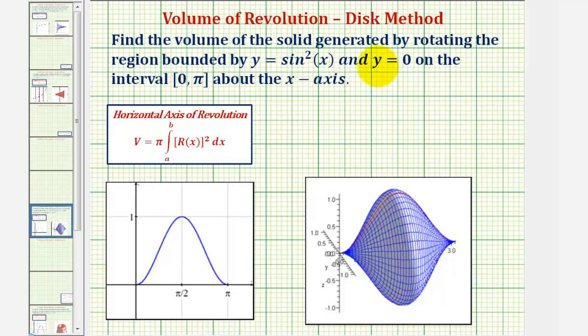We want to use the disk method to find the volume of the solid generated by rotating the region bounded by y equals sine squared x and y equals zero on the closed interval from zero to pi about the x-axis.